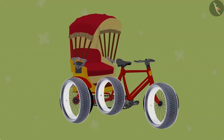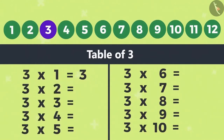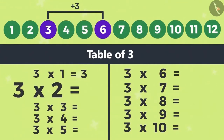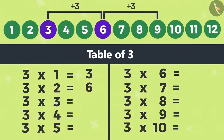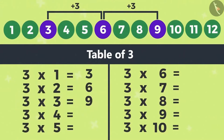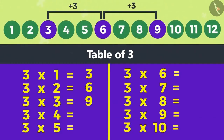One rickshaw has 3 tyres. To find out how many tyres 2 rickshaws have, we will add 3 to 3. The answer will be 6. That means multiplying 2 by 3 gives 6. Then after adding 3 to 6, the answer will be 9. That means 3×3 is 9. You see, to write a multiplication table of 3, we are writing every third number. Instead of adding again and again, if we read out every third number starting from 3, we get the multiplication table of 3.